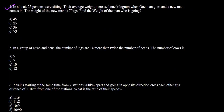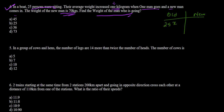Question 4 says: in a boat, 25 persons were sitting. Their average weight increased by 1 kilogram when one man leaves and a new man joins. The weight of the new man is 70 kg. We need to find the weight of the man who left. Let us assume the average weight of the 25 persons was x, so the total weight was 25x.